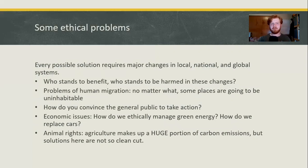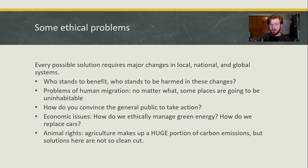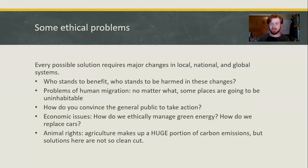There are quite a few ethical problems we need to address. Every possible solution requires major changes on every level: local, national, global, personal. We need to ask who stands to benefit and who is harmed by these changes. Things like degrowth — where we just cut back on everything causing harm — leave people who stand to lose everything, and it's not typically the wealthy. It's your average worker who drives a more emitting car. However, it is also a small handful of corporations that cause the most environmental damage, but there are a lot of real people that work for those corporations. How do we make sure those people are taken care of if we just cut off the tap on climate change?